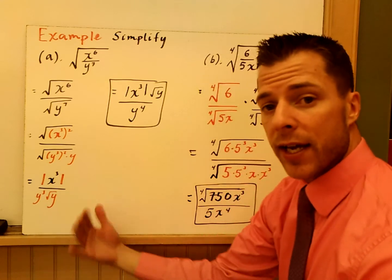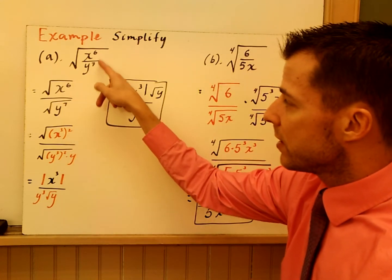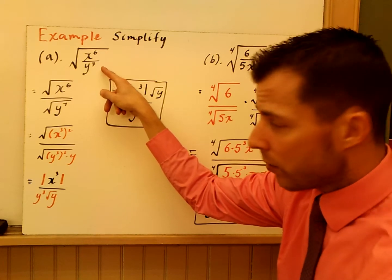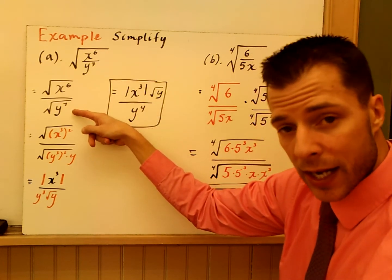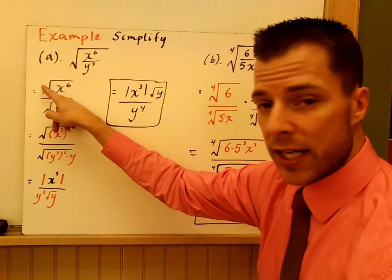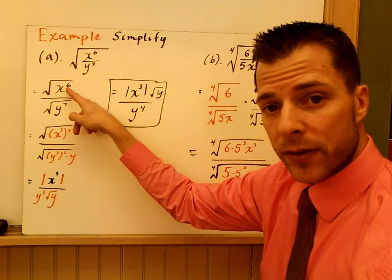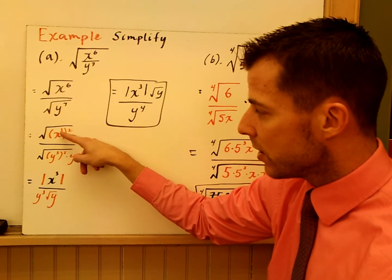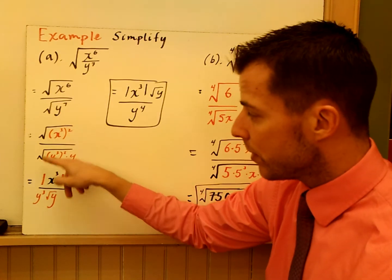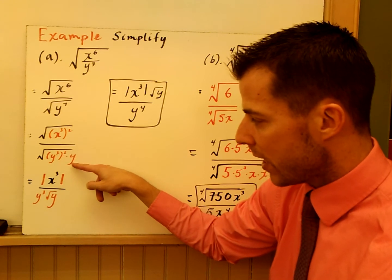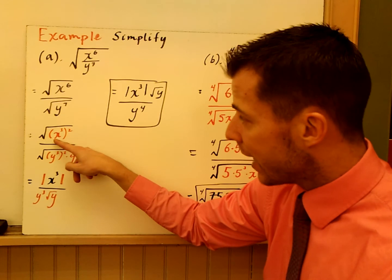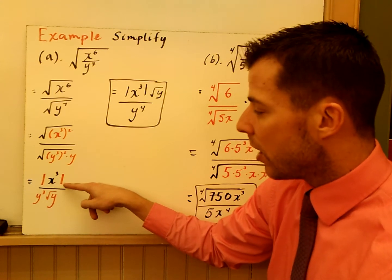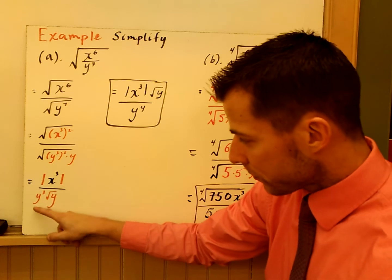Now we apply the quotient property and rationalization. We have the square root of x to the sixth over x to the sixth y to the seventh — taking the square root of the whole thing. By the quotient property, split the root into top and bottom. Can I write what's underneath to match the index? Six has a factor of two: x to the 6th is x cubed raised to the second power. y to the seventh can also be written with powers of two: y cubed raised to the second power times y. Even index, even power, odd output — absolute value goes on x cubed.